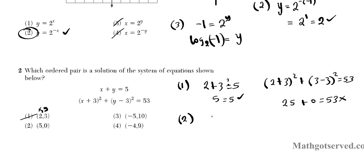Now let's try option 2. 5 plus 0 is equal to 5? Absolutely. So that checks out. Now let's check the second one. 5 plus 3 squared plus 0 minus 3 squared. Is that equal to 53? So 5 plus 3 squared is 8 squared, which is 64. That's 64 plus 9 equals 53. Absolutely not. 64 plus 9 is 73. So this is not a good option.